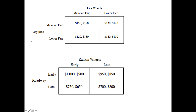Now let's look at the third example: Easy Ride and City Wheels, who can either maintain fares or lower fares. If City Wheels definitely maintains their fare, Easy Ride chooses between 150 and 120 — they maintain fares at 150. If City Wheels definitely lowers fares, Easy Ride will lower fares as well because 140 is greater than 130. If Easy Ride maintains fares, City Wheels matches at 180 since that's greater than 120. If Easy Ride lowers fares, City Wheels maintains fares because 130 is greater than 110.